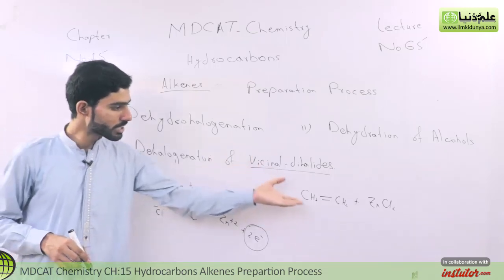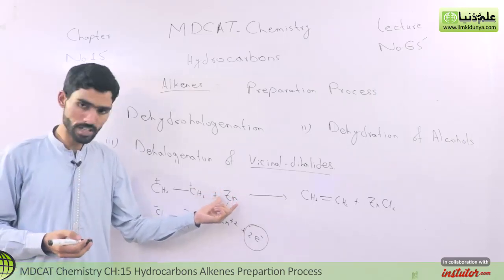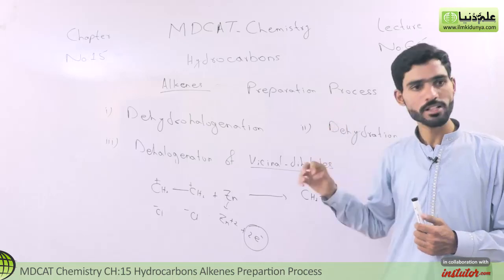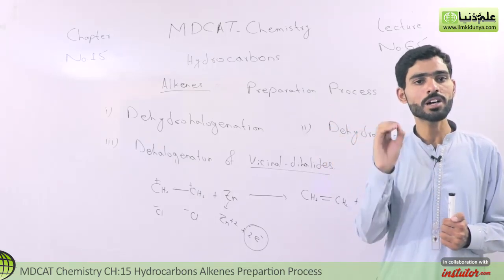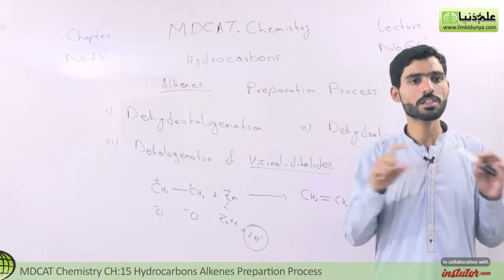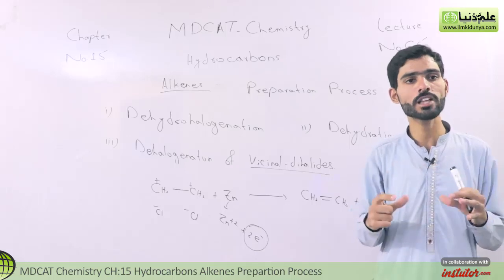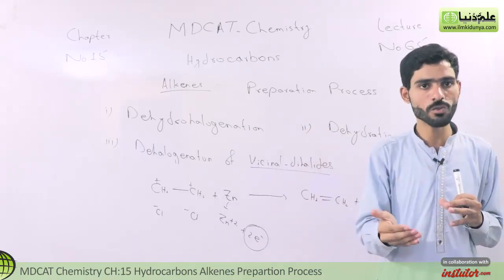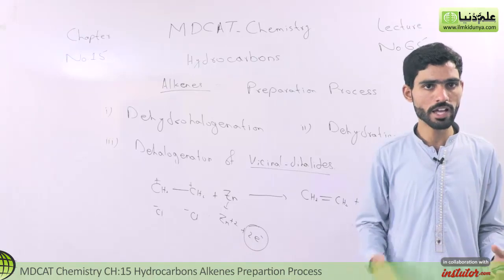Using vicinal dihalides and zinc dust, we get the final product — alkenes. So in this lecture we have taken the introduction of alkenes and studied three preparation methods. In these processes you must keep in mind the key terms: dehydrohalogenation, dehydration of alcohols, and dehalogenation of vicinal dihalides. Also keep in mind the conditions — the catalyst, temperature, pressure, and medium used for each method.